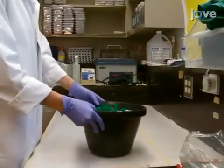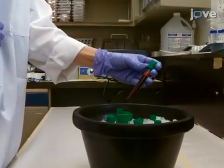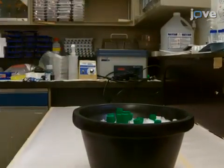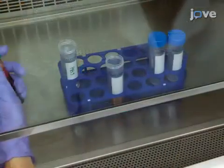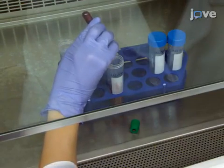To begin, obtain 80 mL of fresh human whole blood in 14 heparinized green top tubes as described in the text protocol. Open each tube and add 5 mL of PBS without calcium and magnesium to each tube.